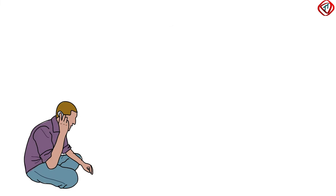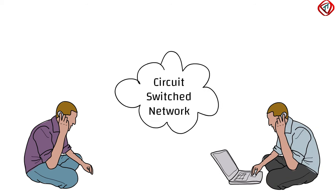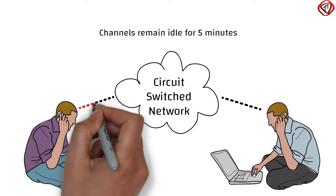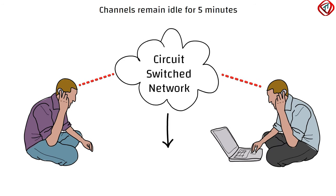Suppose a person is talking to his friend. After some time, both of them stop talking for 5 minutes. For these 5 minutes, the reserved resources are idle and cannot be used by any other ongoing communication because they are reserved for their communication session only. Due to this reason, the circuit switched networks have low efficiency.